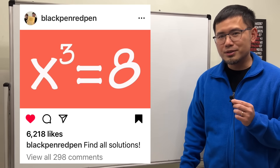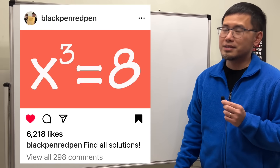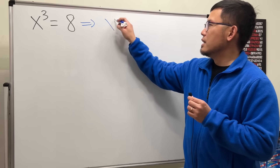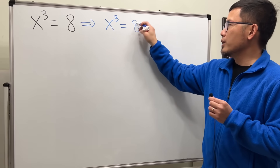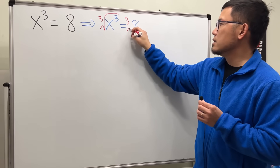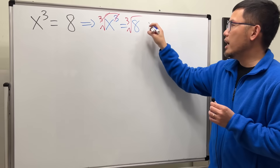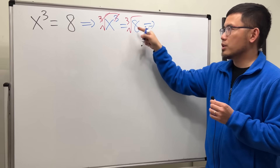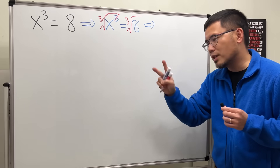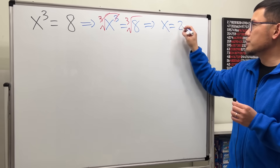We are going to find all the solutions to x to the third power equals 8. You might be thinking: let's just take the cube root on both sides so this and that cancel, and we get the cube root of 8, which is 2, because 2 times 2 times 2 equals 8. So it looks like we just have x equals 2.